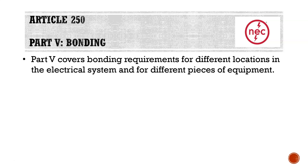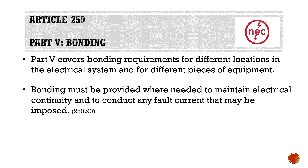Starting off, we're going to be taking a look at Article 250, Part 5, Bonding. Part 5 covers bonding requirements for different locations in the electrical system and for different pieces of equipment. Depending on where we're at in the electrical system — whether at the service or branch circuit — and depending on what type of equipment we're working on, we have different rules regarding bonding requirements.